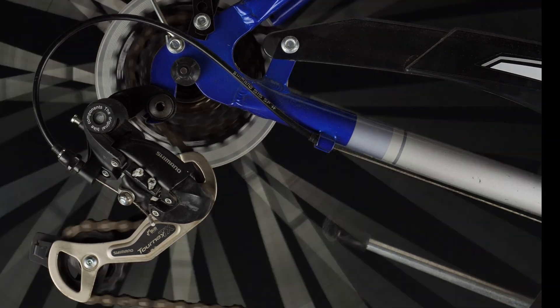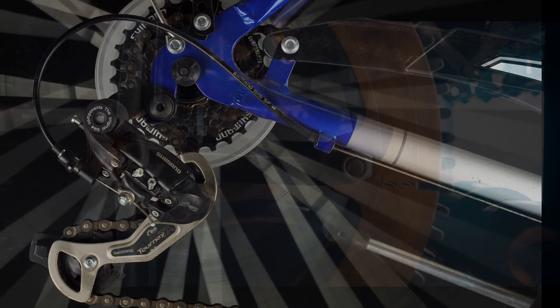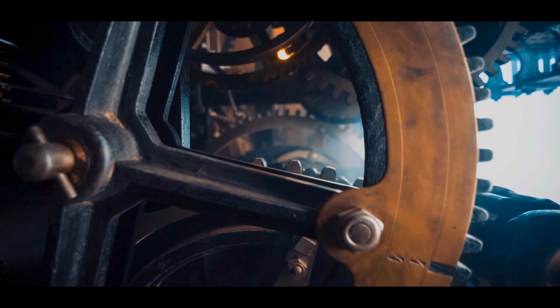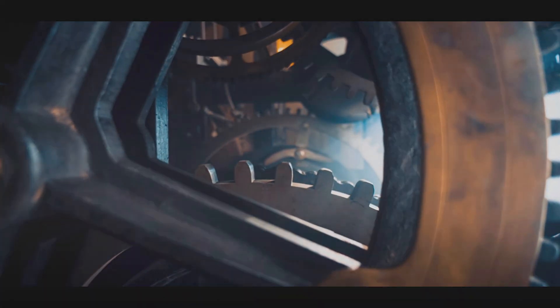Have you ever wondered what keeps the wheels of a bicycle spinning effortlessly or the gears of a machine running smoothly at high speed? The secret lies in this small, powerful component called a ball bearing.